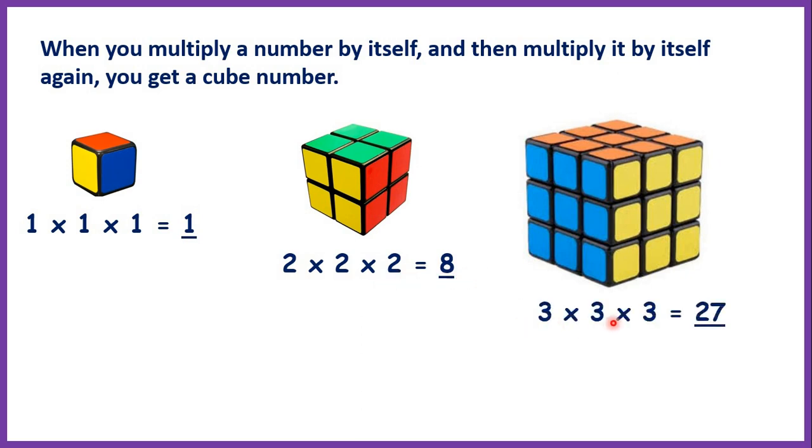And 3 times 3 times 3 is 27 because 3 times 3 is 9 and then 9 times 3 is 27.